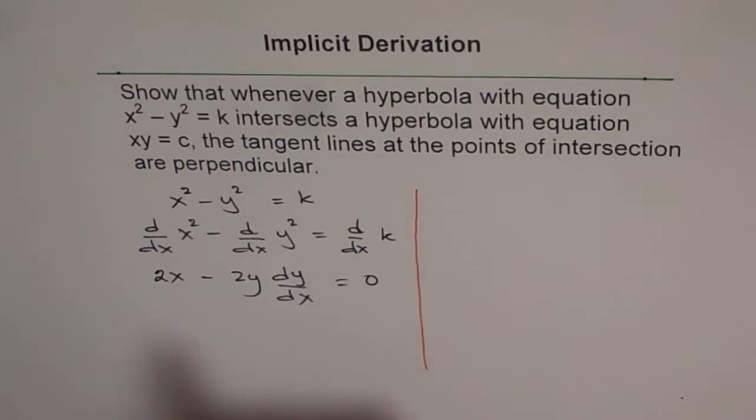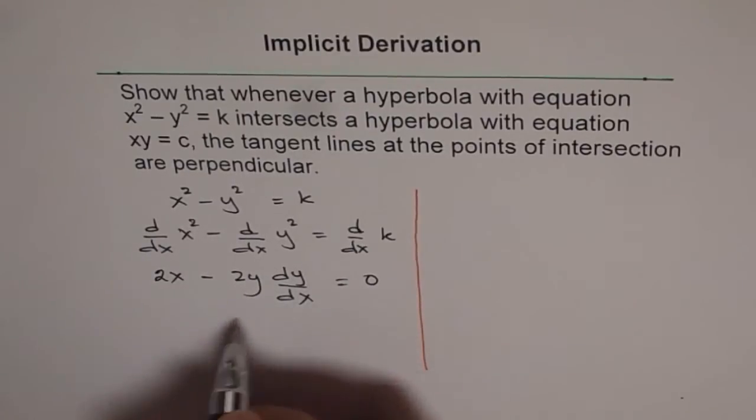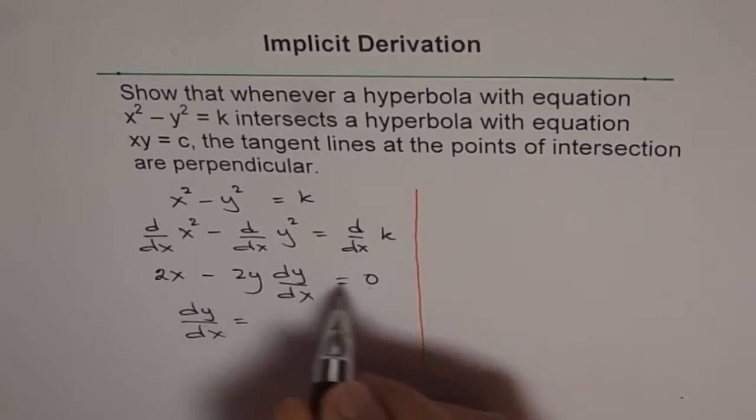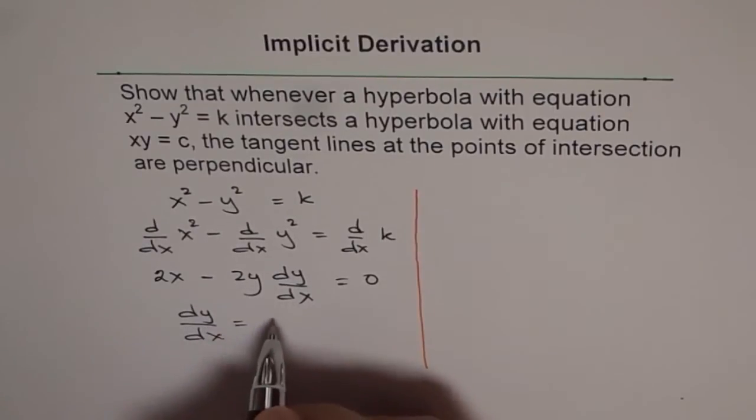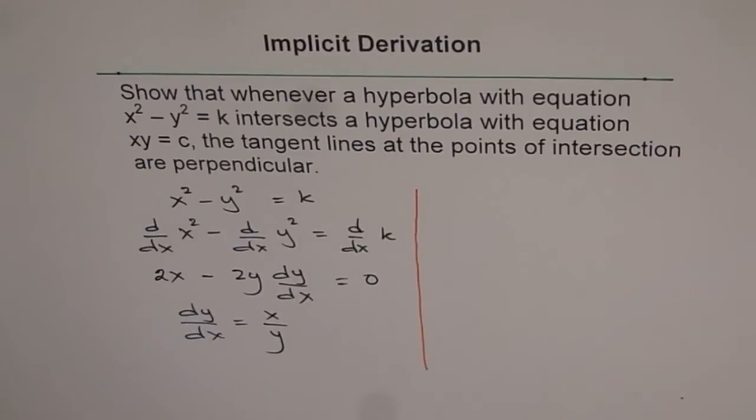So you understand how I got this. Now from here, I need to isolate what dy/dx is. So I say, dy/dx is equal to, I take it to this side, I'm left with 2x. I divide 2x by 2y, and so I get x over y. Got it?